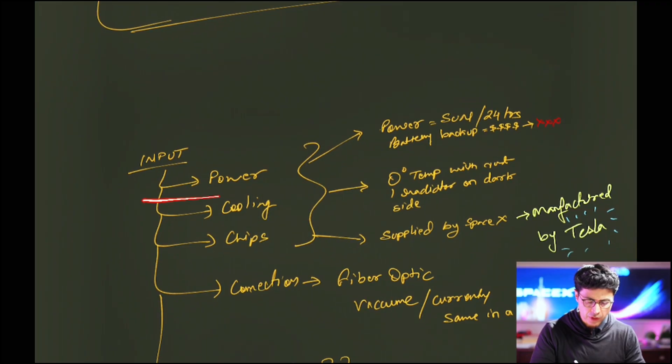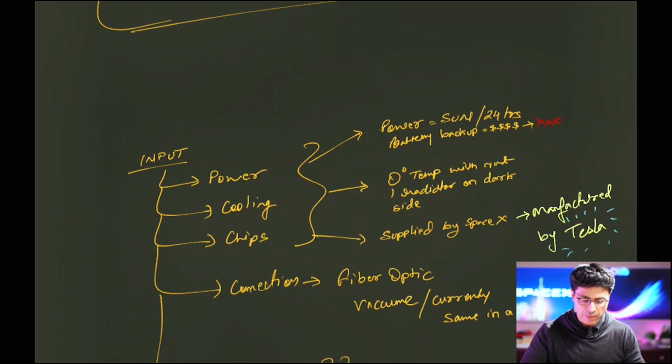So space data center. Any data center need four major aspects. Number one is power. Number two is cooling. Number three are chips. And number four is connection. That's how data center operates.